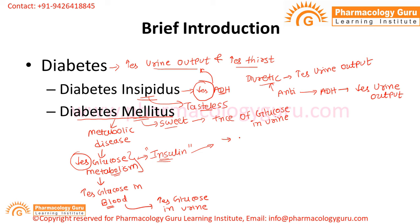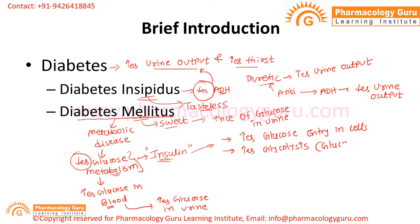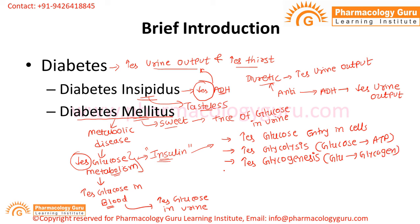There are a number of ways through which insulin helps reduce blood glucose and increase metabolism. First, insulin stimulates glucose entry inside the cells, so peripheral utilization of glucose is increased. It also increases the conversion of glucose into ATP, which is called glycolysis. Additionally, insulin stimulates the conversion of glucose into glycogen, which is called glycogenesis.